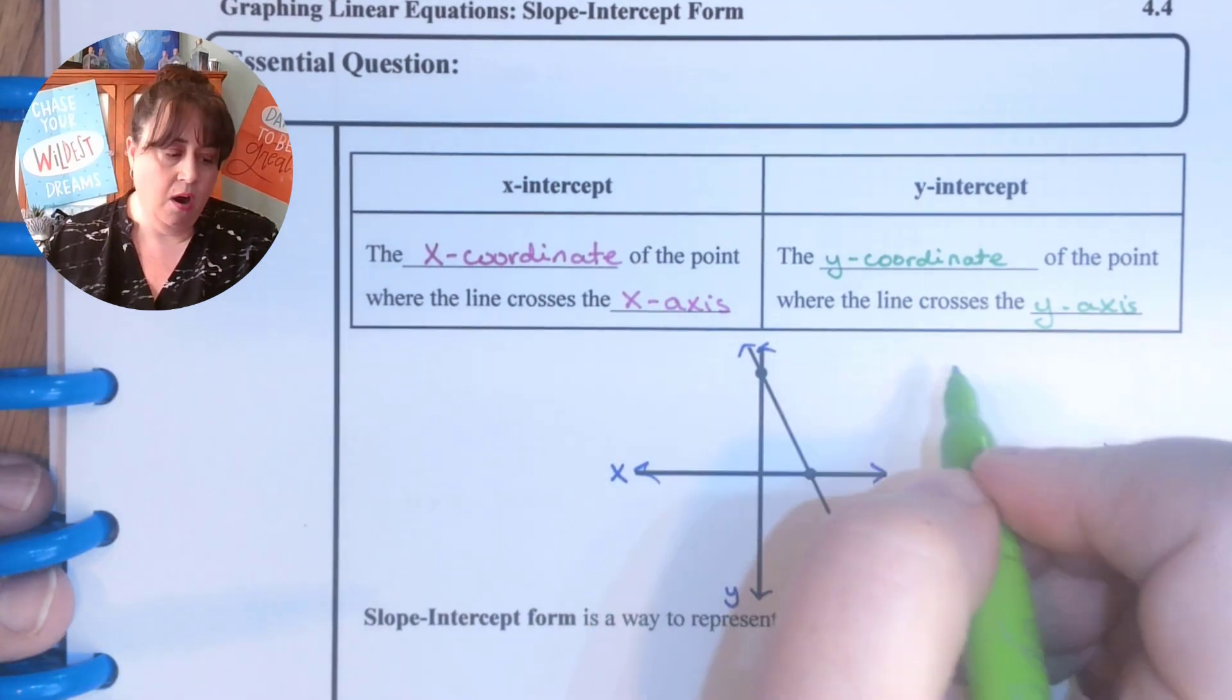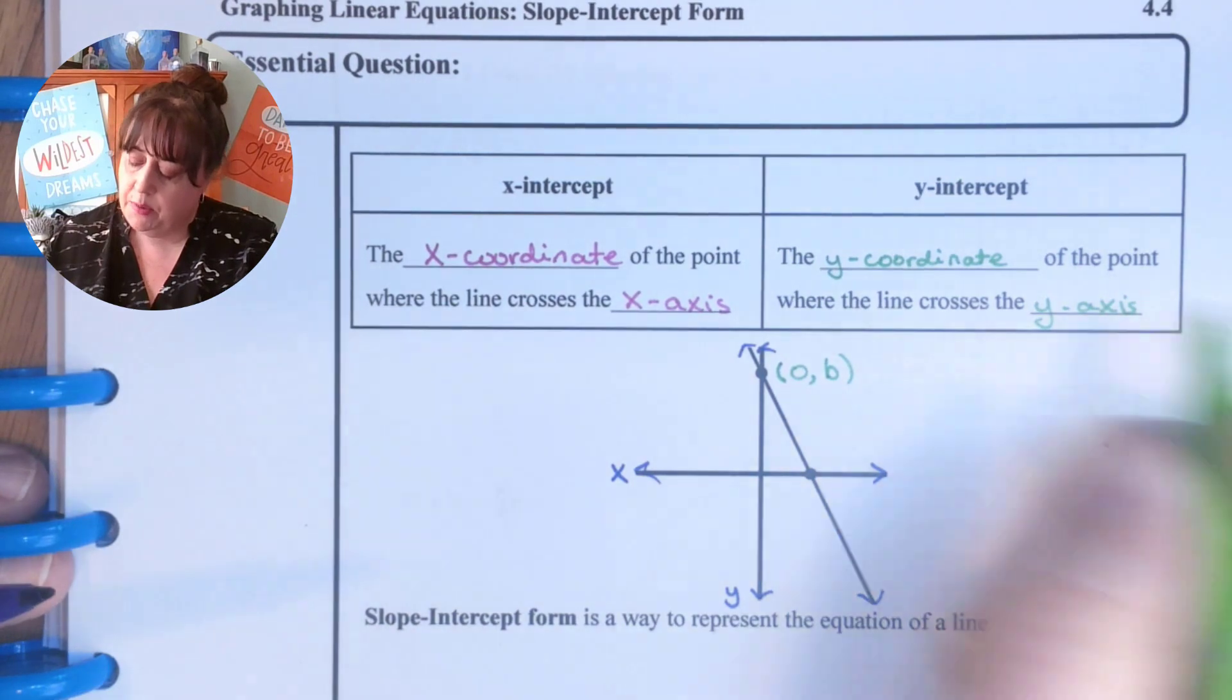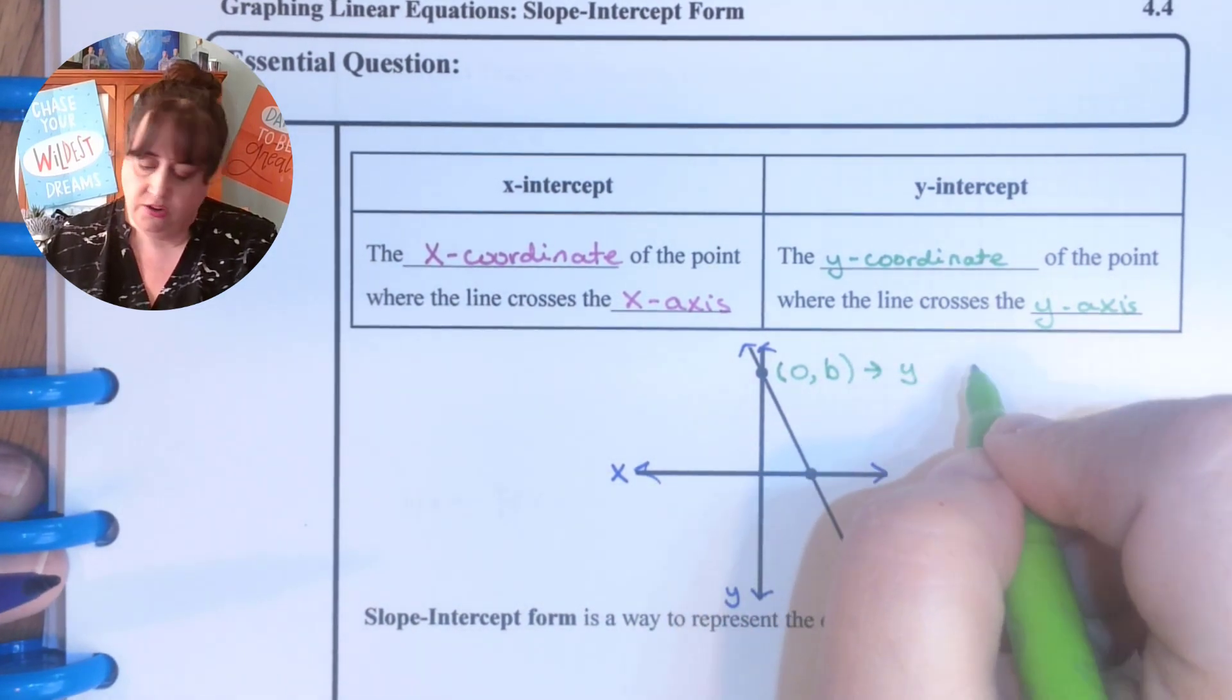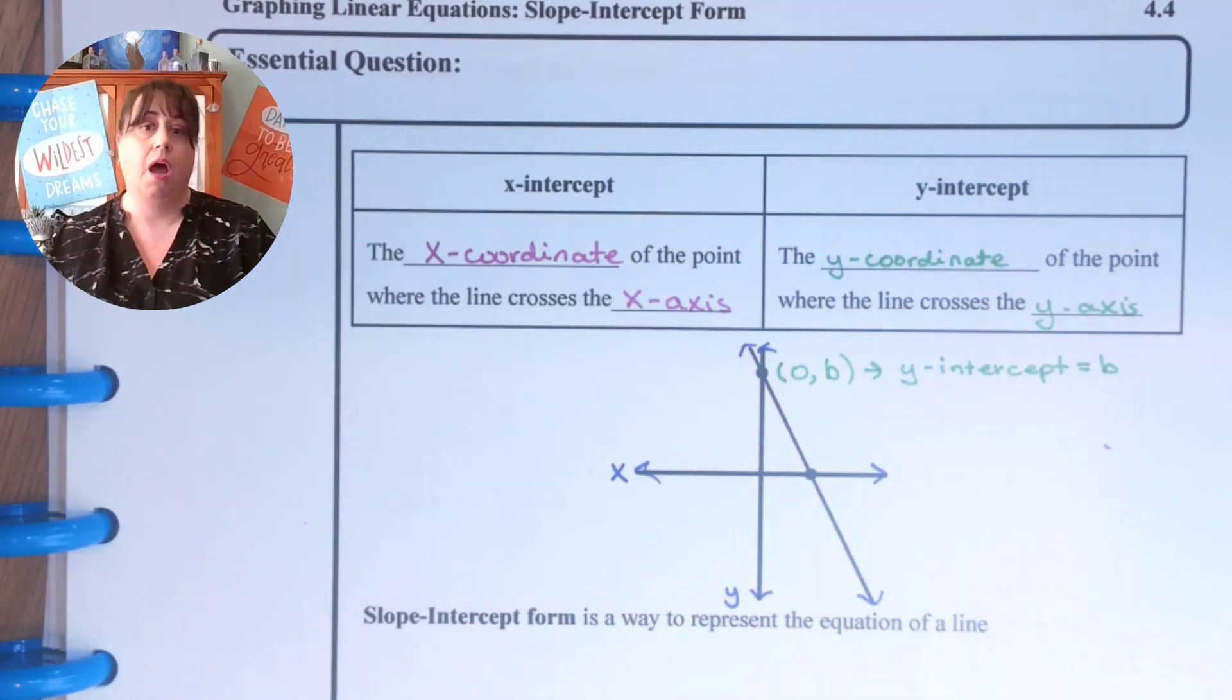So this right here would be our y-intercept and the coordinate is written like this (0, b) and it's called the y-intercept and you will see it equals b a lot. It's super important that you get that and that you see it.